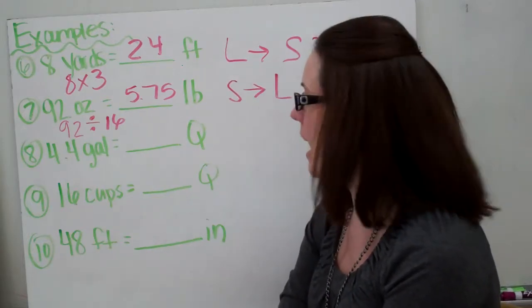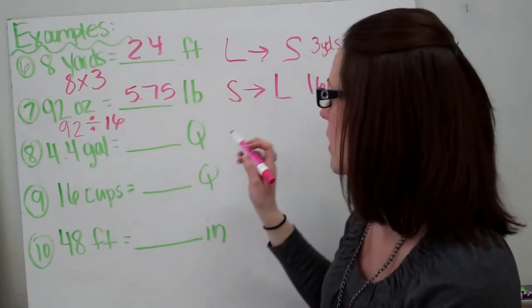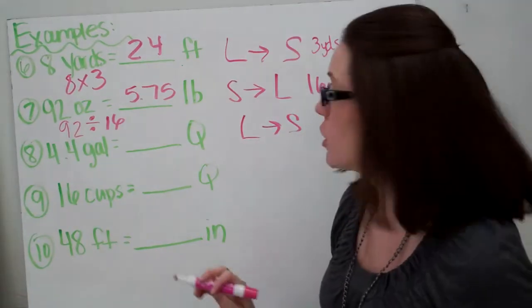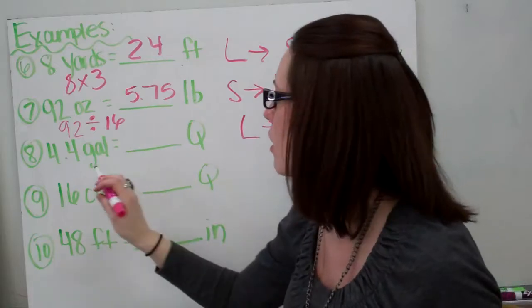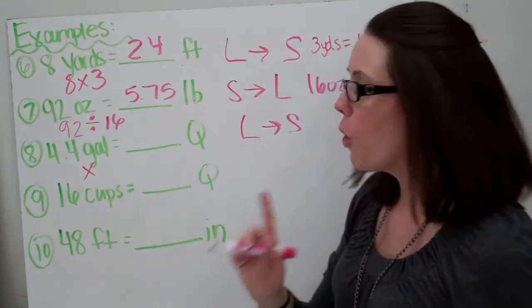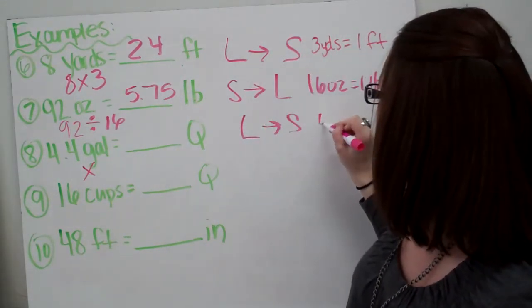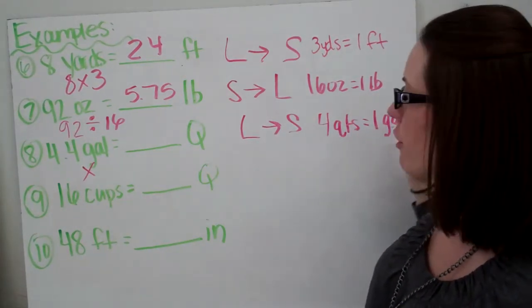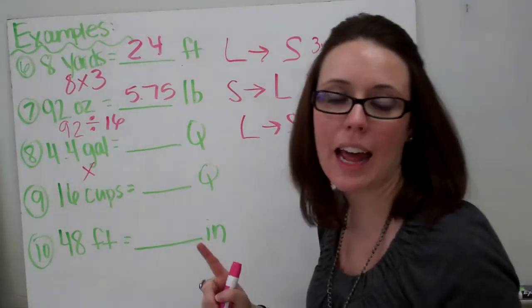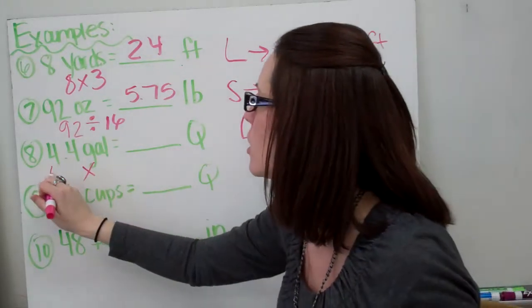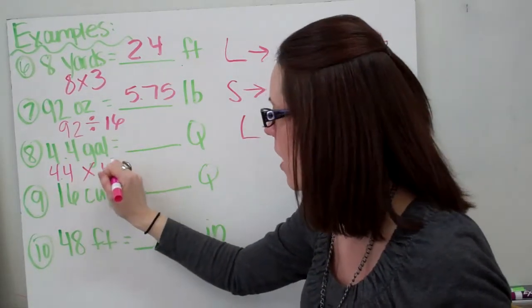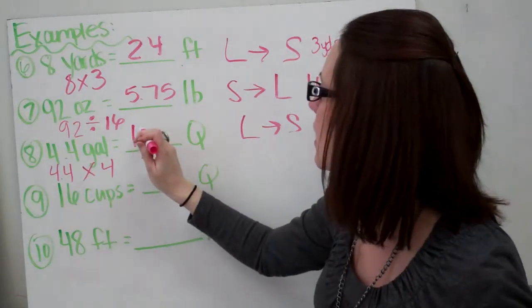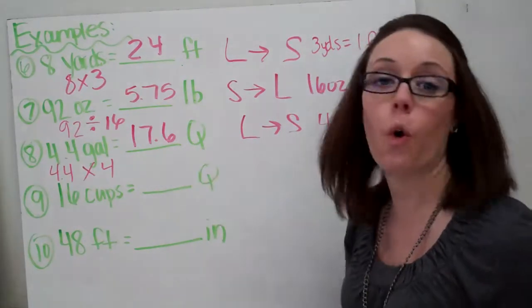Number eight: 4.4 gallons equals blank quarts. We know we're going from a larger to a smaller unit, so we are going to multiply. We know that there are four quarts in one gallon, so we multiply 4.4 times 4, and when you do that you get 17.6 quarts.